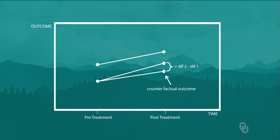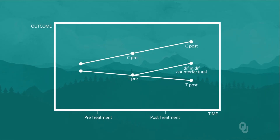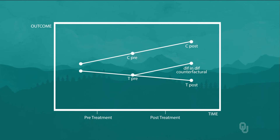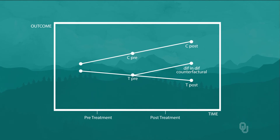I can also illustrate why we need this assumption. Suppose the treated and control groups were on different trend paths before the treatment — say, getting further apart. If those underlying trends continue during the treatment period, then the true treatment effect is zero, but the diff and diff method will give a biased answer because it assumes the treated unit would have the same trend as the control in the absence of treatment. We will discuss how to examine this assumption in our subsection on reality checks for the diff and diff model.